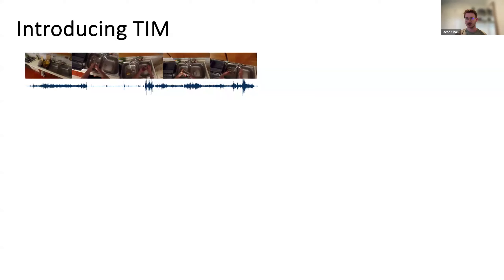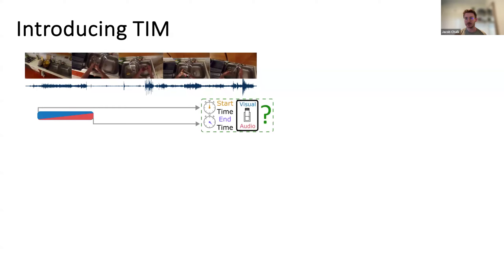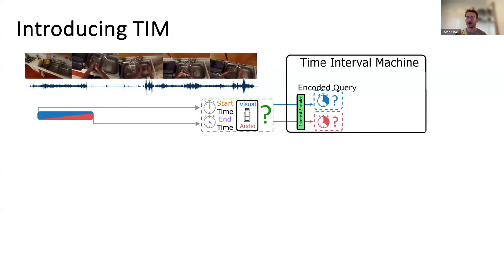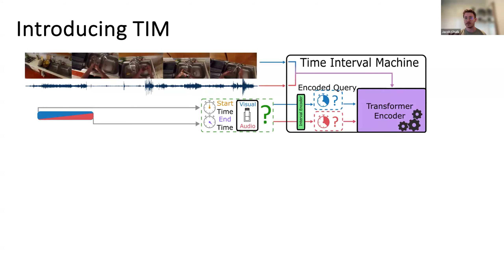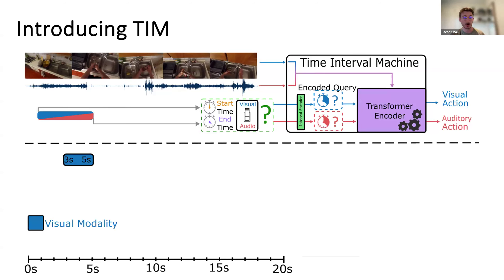This is where we introduce TIM. Given a long untrimmed audio-visual input, we are interested in a particular timestamp — an exact region of an action within that input. We take the start and end time of this action as well as the encompassing modality — whether this is a visual or audio action — and encode this into a D-dimensional vector to represent that time interval. This encoded query, along with the audio-visual input, gets fed into a transformer encoder, and TIM outputs the visual or auditory action occurring within that specific time interval.